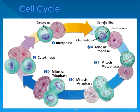Here is the cell cycle. Interphase is the majority of the cell's life. Prophase — the centrioles move to the poles. Metaphase — the chromosomes line up along the equator. Anaphase — separate. Telophase — two new distinct nuclei. Cytokinesis — two new distinct daughter cells.